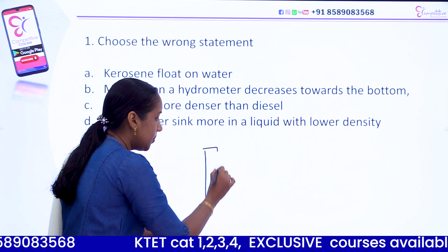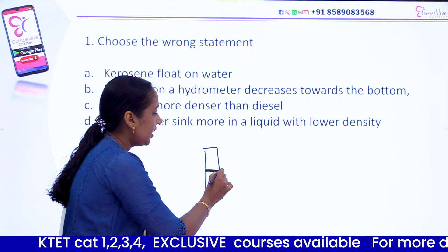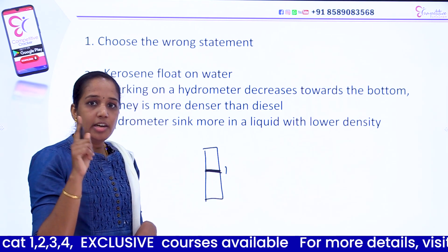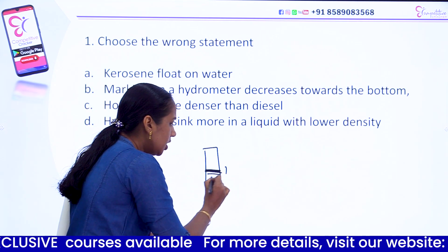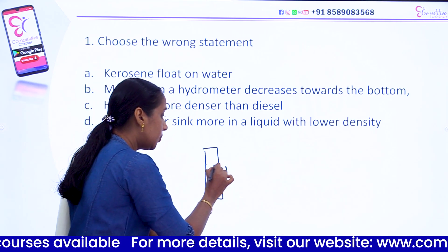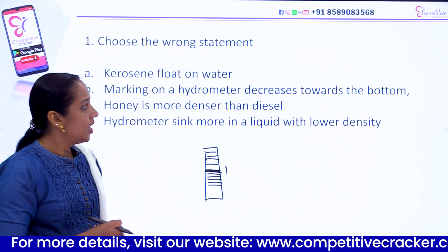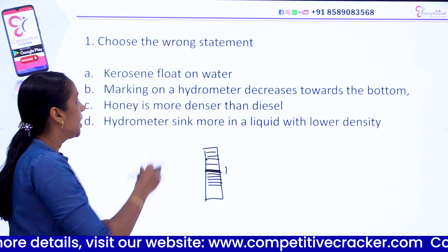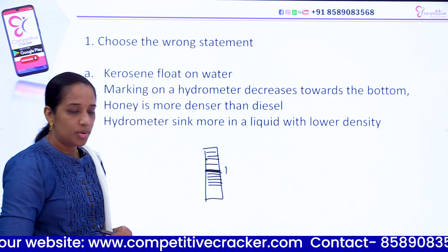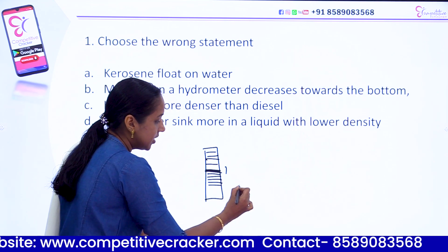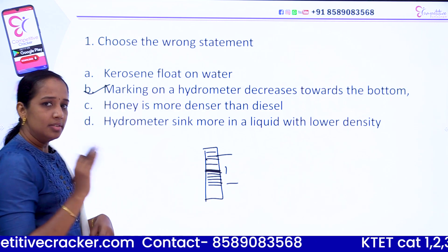For example, this is a hydrometer reading — it measures relative density. The reading increases towards the bottom. The head increases; that's the reading in the hydrometer. So this statement — 'decreases towards the bottom' — is false. The reading actually increases towards the bottom; values go from less than one to greater than one.